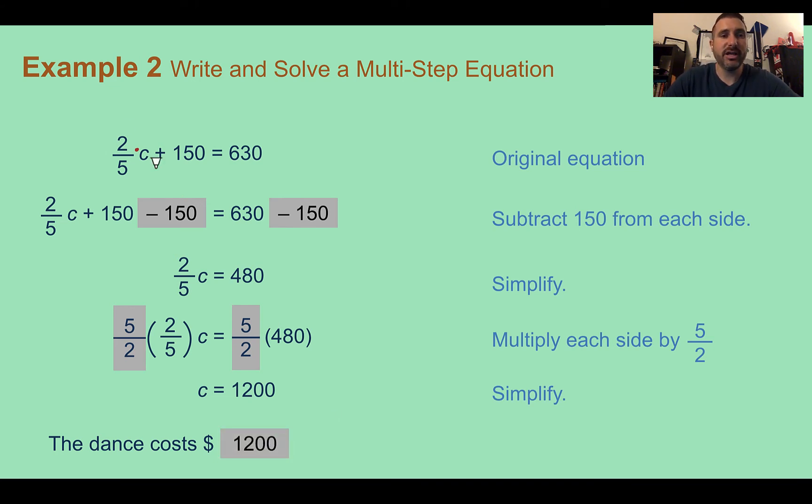And as with before, we should check our answer. So if I plug in 1,200 into my equation, two-fifths times 1,200, then add 150, do I get 630? Let's find out. When we're multiplying by a fraction, I multiply by the top and divide by the bottom, or vice versa, divide by the bottom, multiply by the top. I'm going to divide first by 5. So 1,200 divided by 5, I know that 120 divided by 5 is 24, and then this was just 10 times as much, so my answer would be 10 times as much. Then I still have to multiply by 2, so I get 480. Add 150. Do I get 630? Yes, I do. So did I get a true statement? Yes, 630 equals 630.